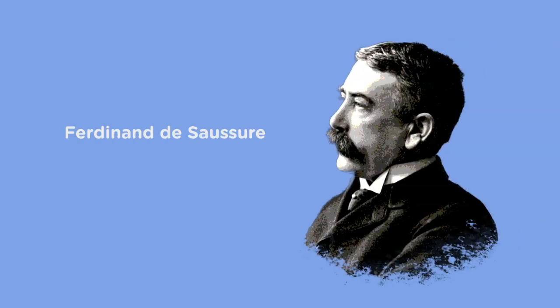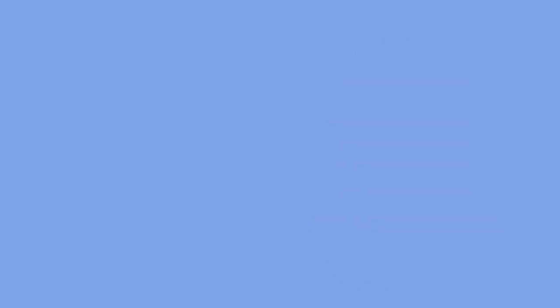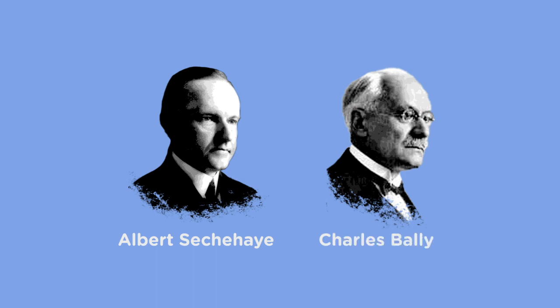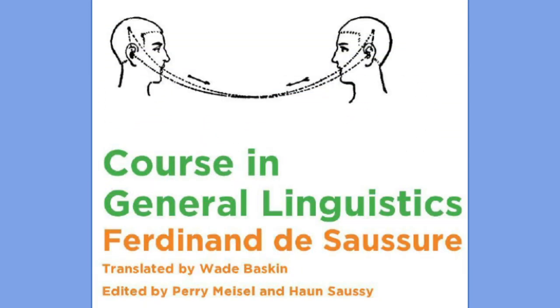The prevailing view in linguistics on the nature of language for most of the 20th century was formulated by Swiss linguist Ferdinand de Saussure in his lectures delivered between 1906 and 1911 at the University of Geneva. Later, two linguists named Albert Sechehaye and Charles Bally edited these lectures and published them as Course in General Linguistics in 1916, which became one of the most influential publications in the history of linguistics.